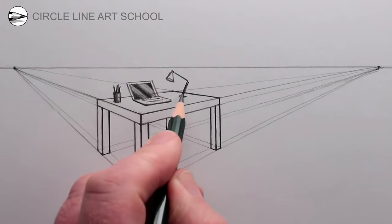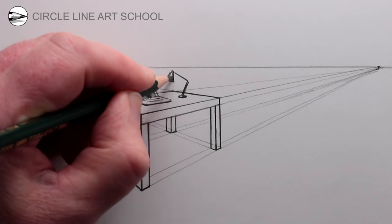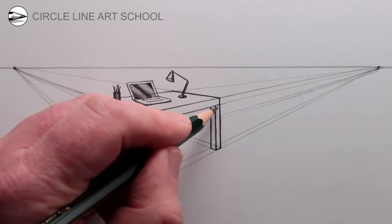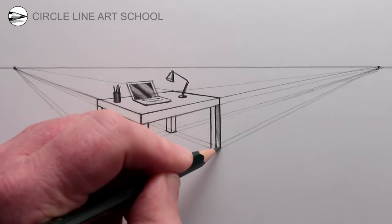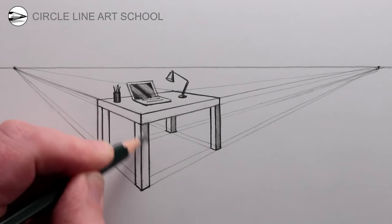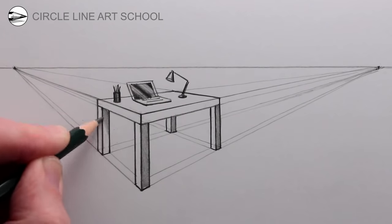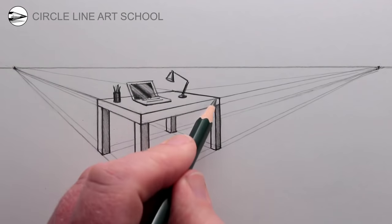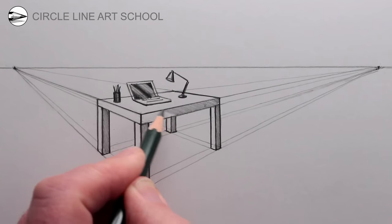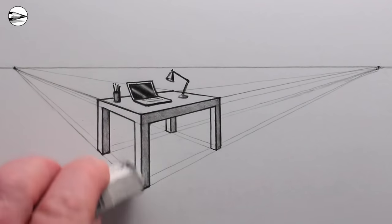Now we have a basic table in two-point perspective with a few objects on its surface. We can add some shading — using the side of the pencil, shade all the shapes of the table that are on the right-hand side, including the table legs and the thickness of the table, which can have a shaded area on the right-hand side. Next, erase some of the perspective guidelines that we no longer need.